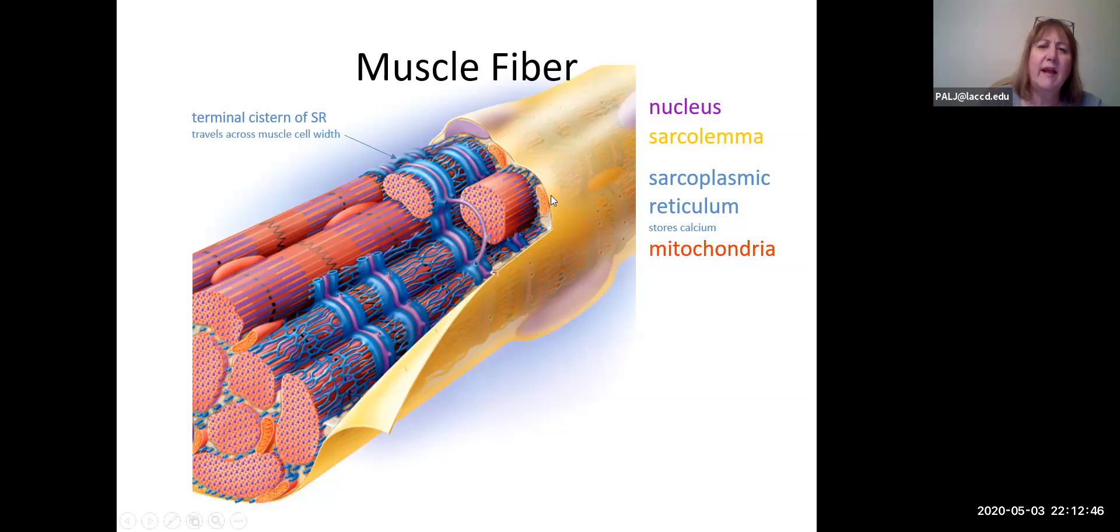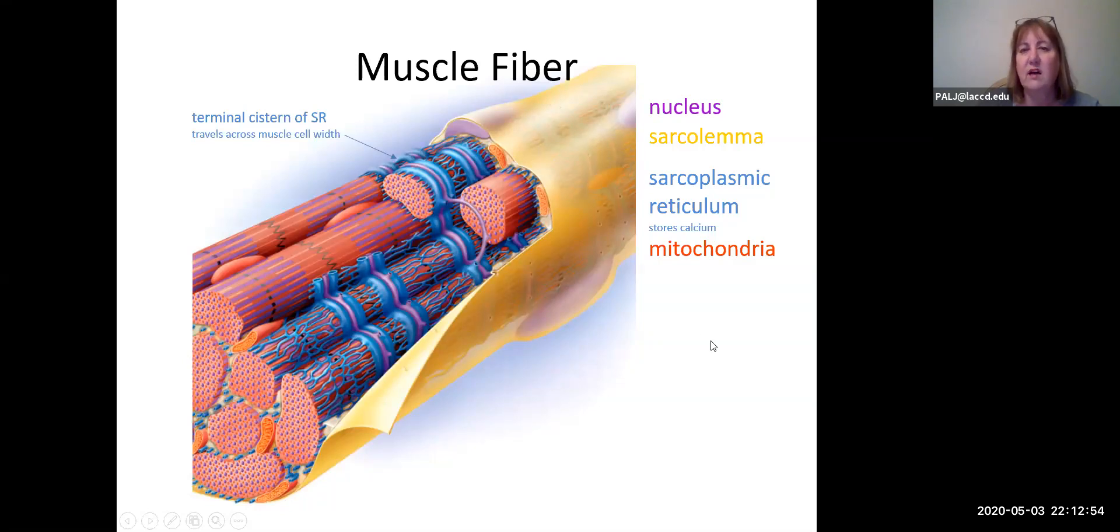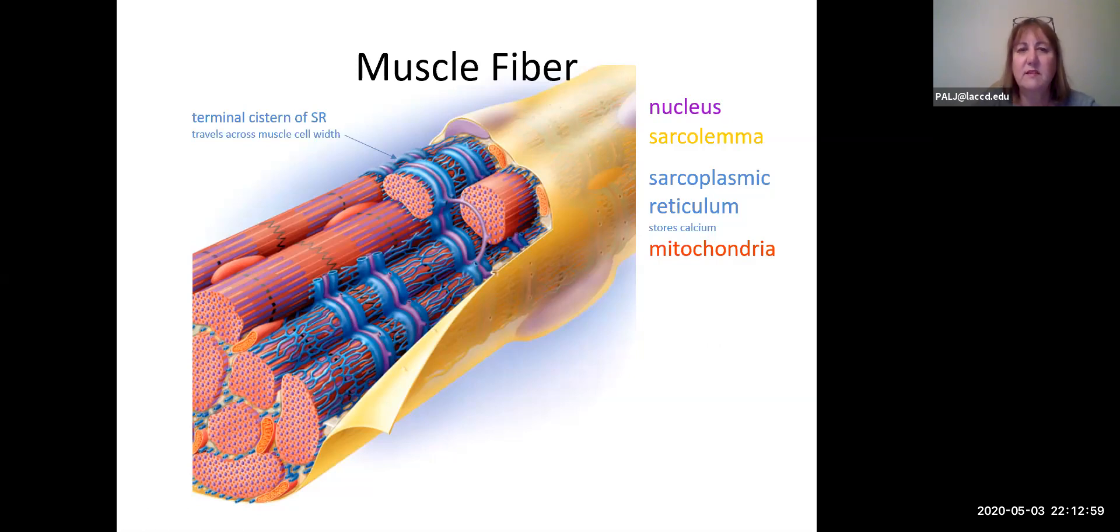These orangey structures here, and you see a plethora of these, are all mitochondria. In this picture we have like 10 mitochondria to give you the idea. Lots of ATP is going to be made and used.